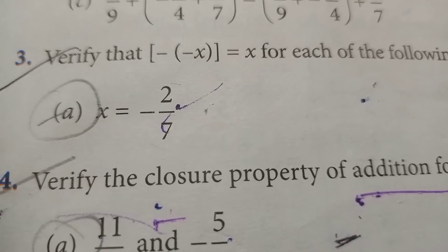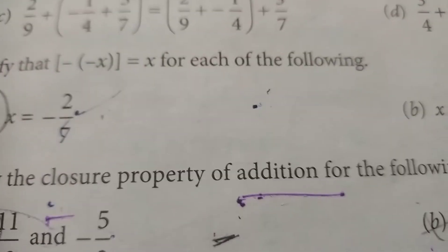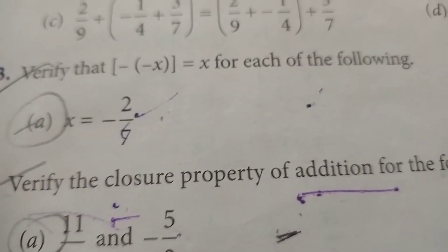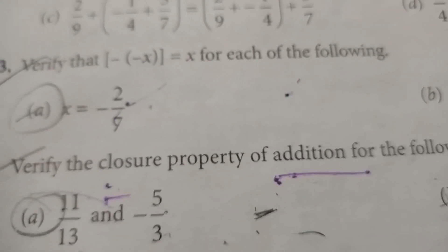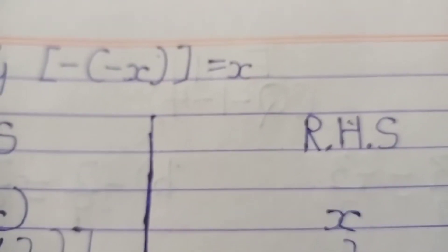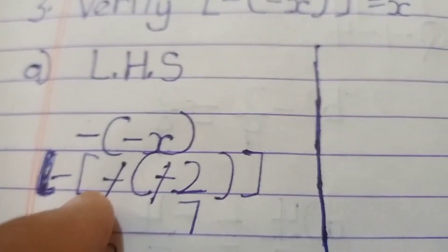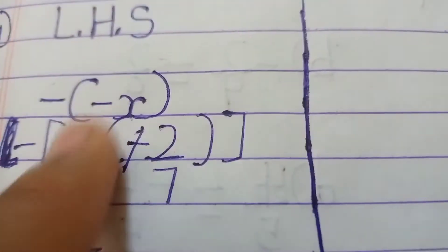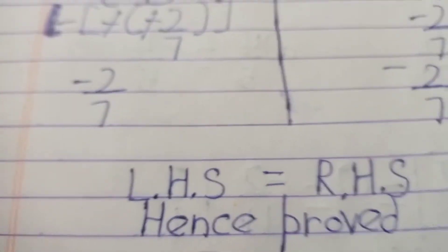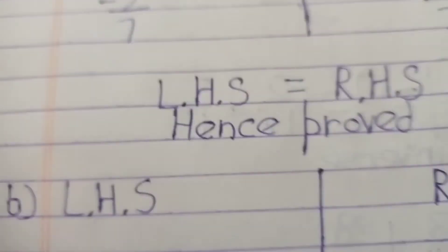Third question: verify that -(-x) = x for each of the following. Part (a): x = -2/7. We take LHS = -(-(-2/7)). Inside, -(-2/7) gives -2/7 with two negatives cancelling, leaving -2/7 on LHS. So LHS = -2/7 equals RHS = -2/7. Hence proved.